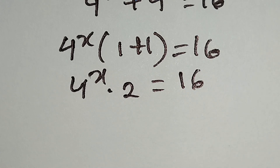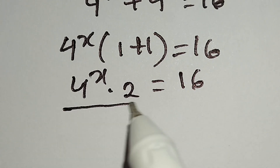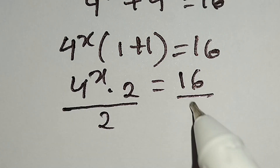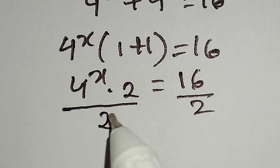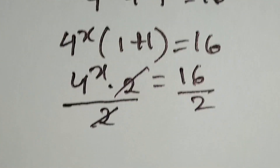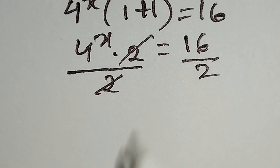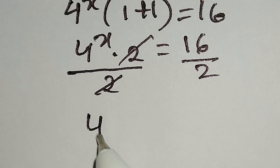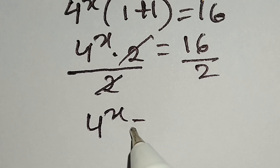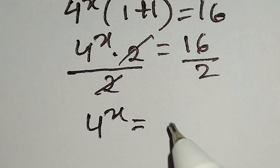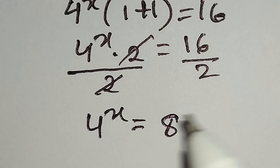Now we will divide both sides by 2, so we can write 16 over 2. This 2 and this 2 cancel out, giving us 4 to the power x is equal to 16 over 2, which is equal to 8.